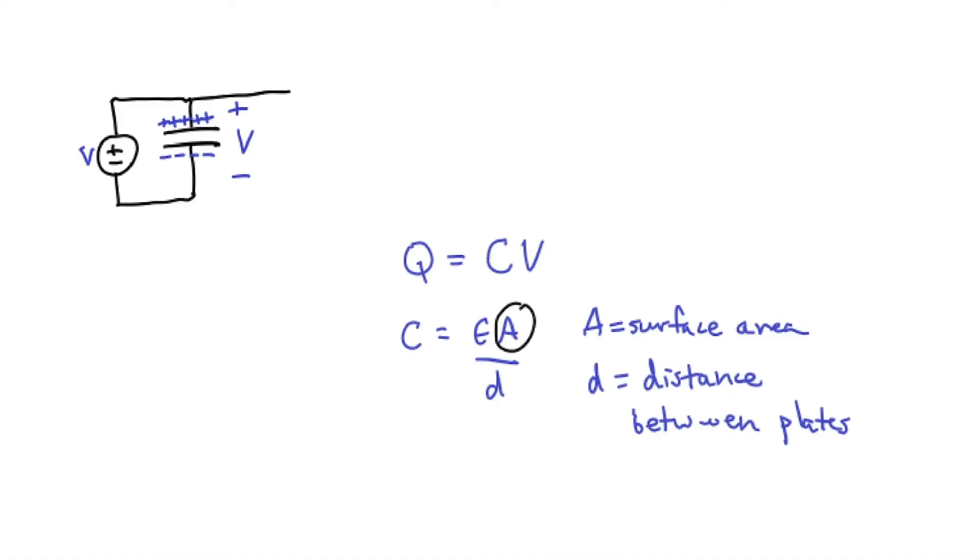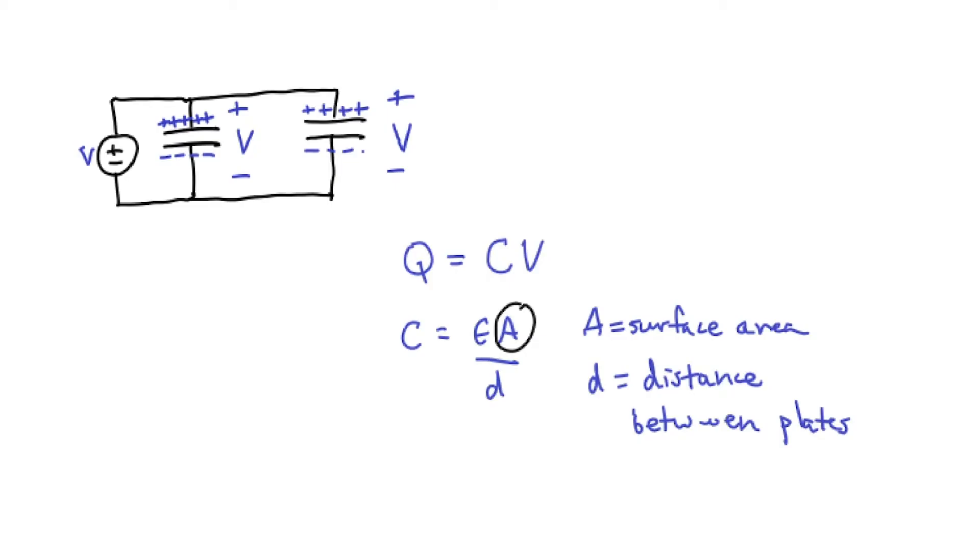But it's also useful to see what happens if we have more than one capacitor wired up in parallel. I'm going to add another capacitor to the circuit diagram. We haven't changed the voltage source, so we still have the same voltage applied across the second capacitor. The question is now, how much charge is stored in total? Well, if the two capacitors are the same, and the two surface areas are now the same, then we've got double the charge as before.